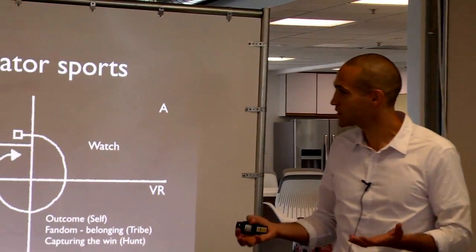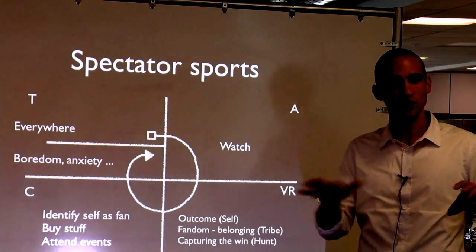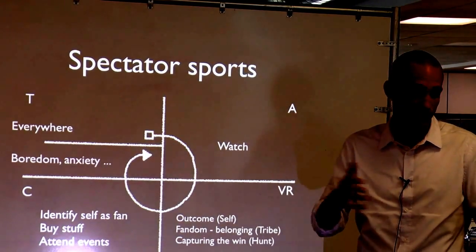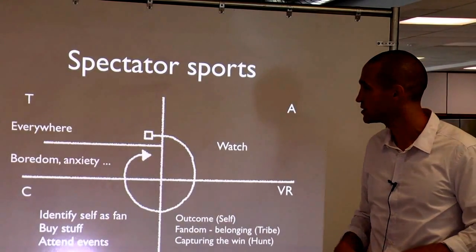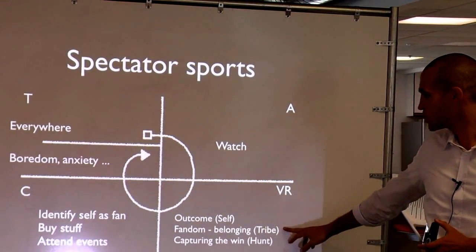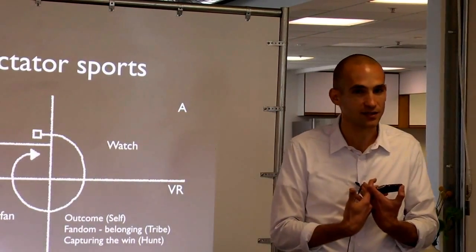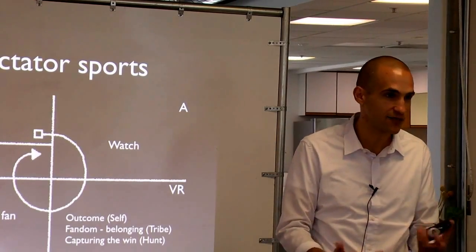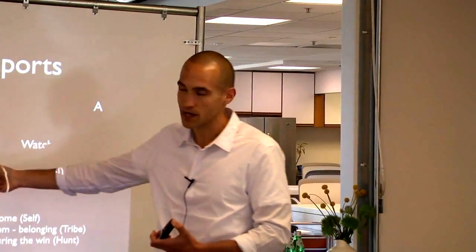We can run the same Desire Engine for spectator sports. Triggers are too numerous to name — sports are all around us. The action is just to watch. Variable rewards: outcome for rewards of the self, belonging for the tribe, capturing the win for the hunt. The commitment phase is about identifying yourself as a fan — every time you buy something with a team identity, attend an event, or form a memory of connection, you're committing to that experience. Next time you're bored or anxious at work, you're on ESPN. This is how we form habits around spectator sports.